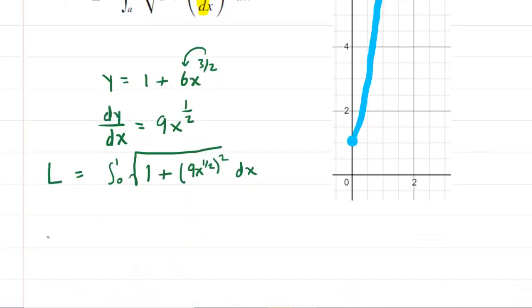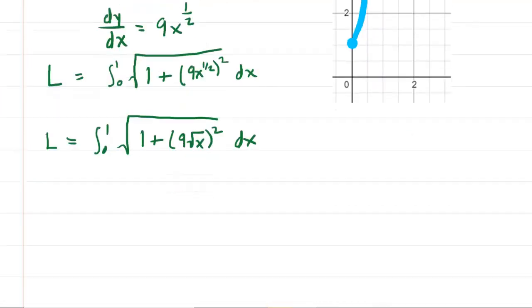Now we need to simplify this before we integrate. What we can do is rewrite nine x to the half as nine times the square root of x. When we square the square root of x, they essentially cancel, leaving just x. But don't forget to square the nine as well. You'll have the integral from zero to one of the square root of one plus 81x dx.